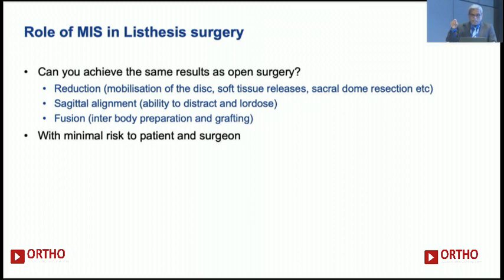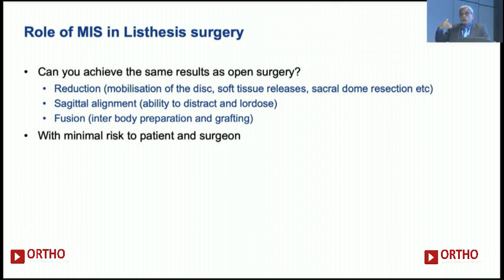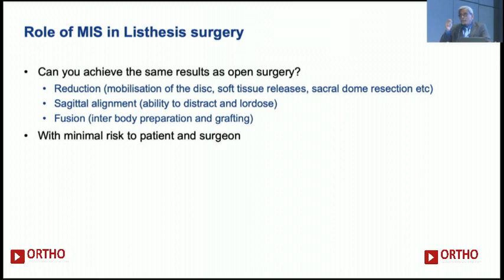What then is the role of MIS in high-grade listhesis surgery? You have to achieve the same result as open surgery — you have to achieve the fusion. First, reduction when indicated: SDSG 5 and 6 need reduction; SDSG 4, you can do an in-situ fixation. For reduction, you need to mobilize. Can you achieve the same mobilization by taking out the entire disc, the facet joint, performing the lateral release, and the sacral dome resection? There are obviously people who can do it very well, but a lot of people like me can't, so I prefer the open technique. Second, can you create the sagittal realignment of the spine? Sagittal realignment involves distraction and lordotization.